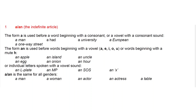The form AN is used before nouns beginning with a vowel, and all words beginning with a mute H. Note that vowels are A, E, I, O, and U. Examples include: an apple, an egg, an island, an hour.